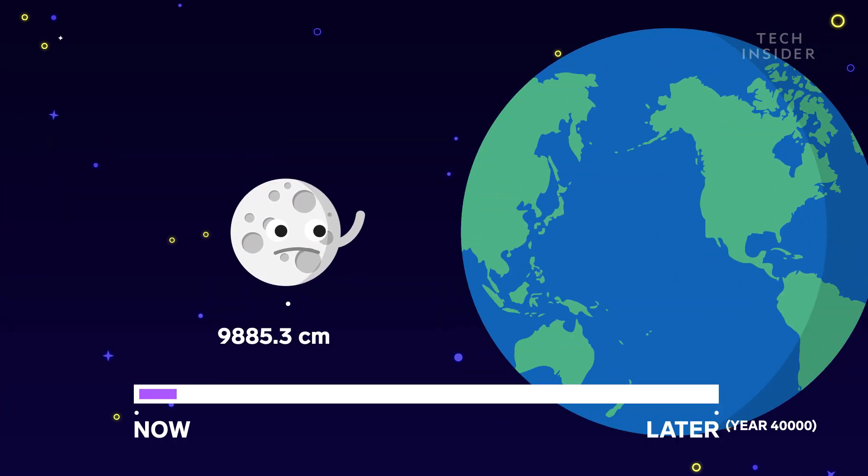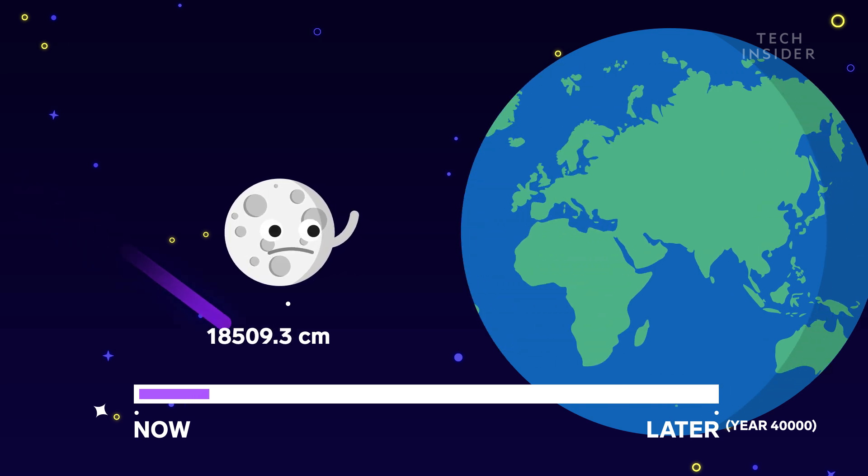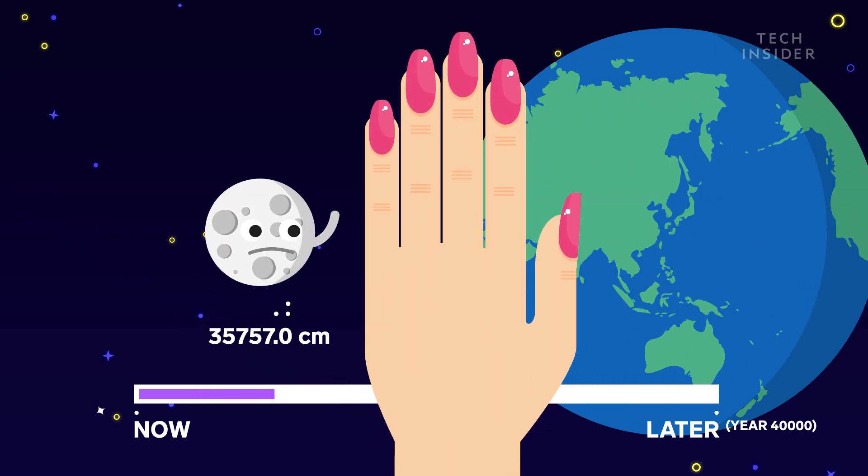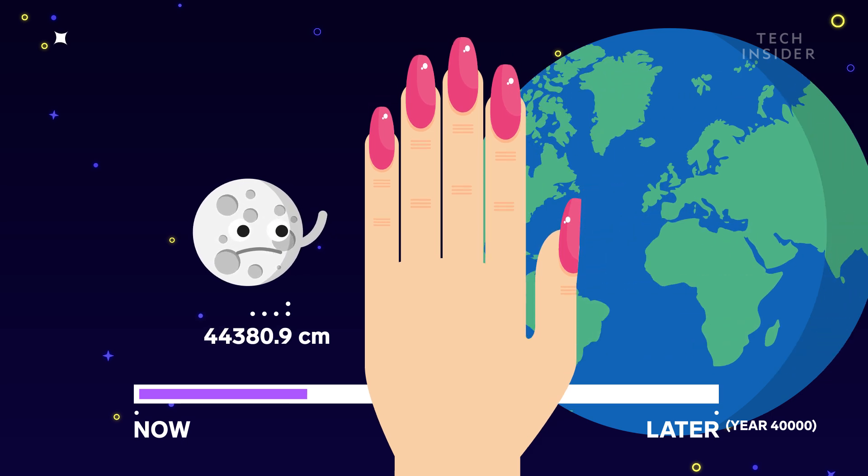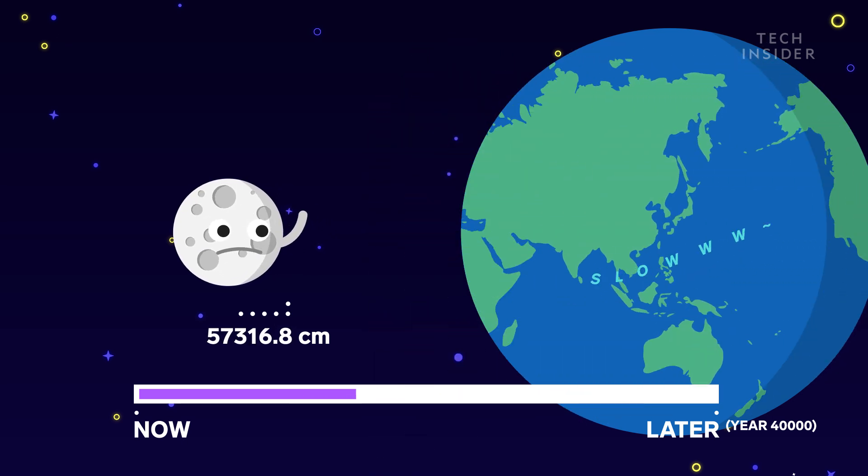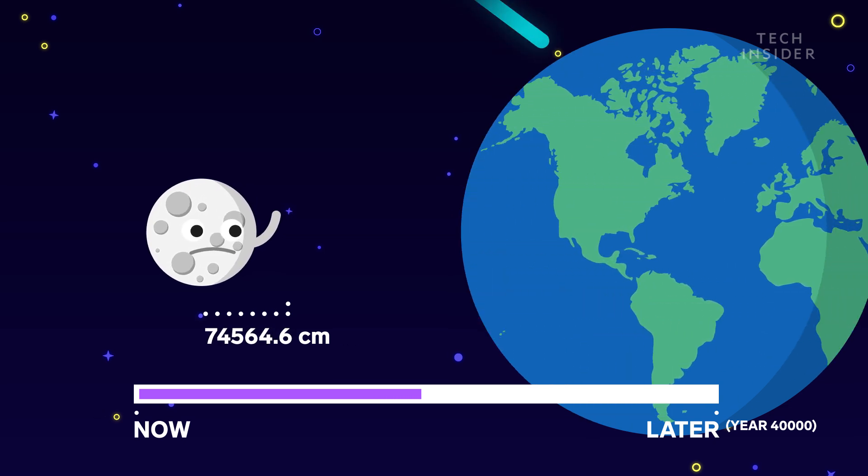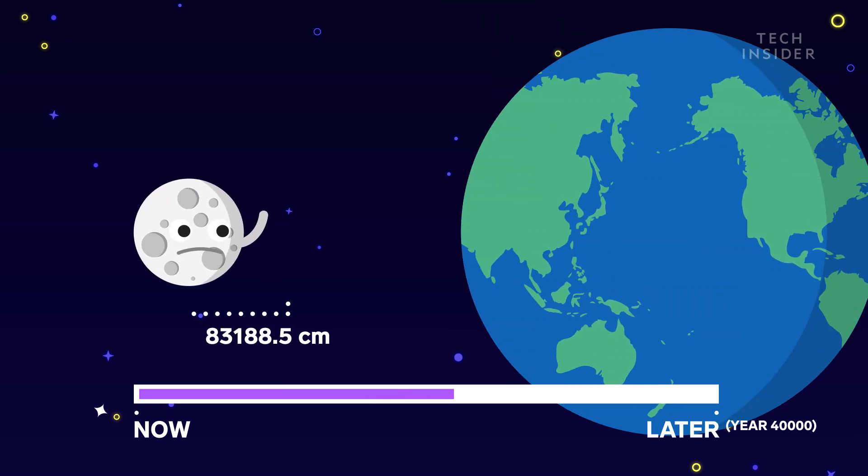Right now, our current moon is spiraling away from Earth at 3.8 centimeters a year. That's about how fast your fingernails grow. At the same time, it pulls on the Earth, slowing down the planet's rotation, which is actually lengthening our days by around one second every 40,000 years.